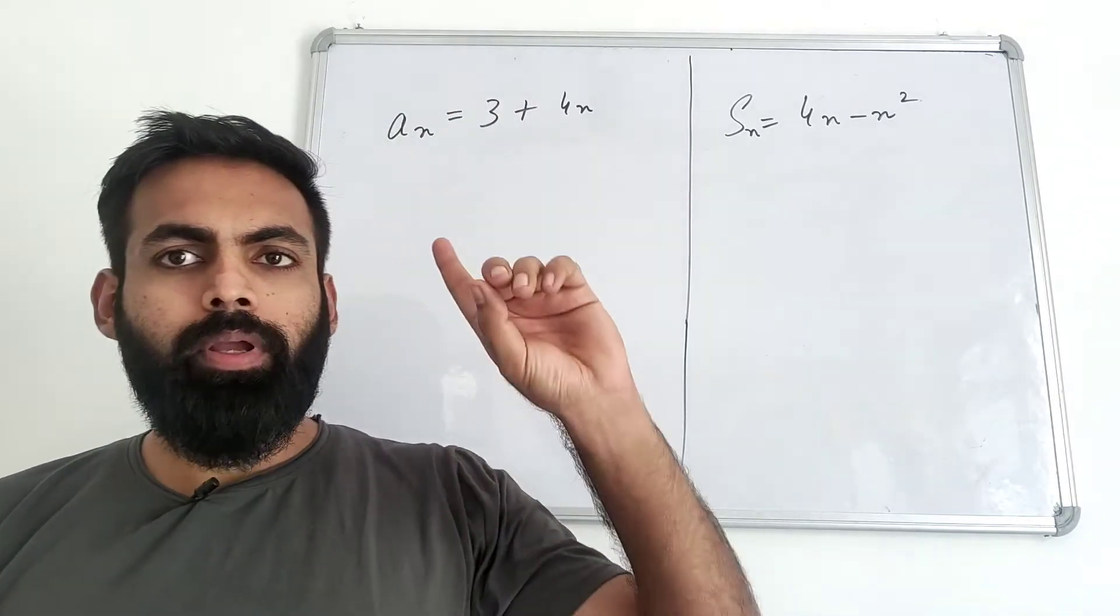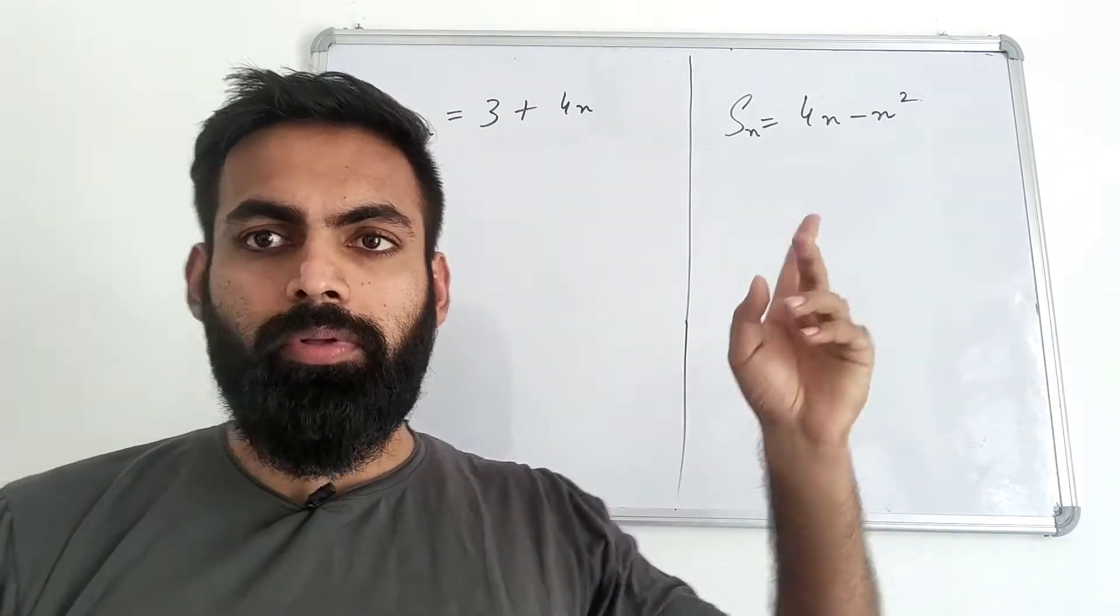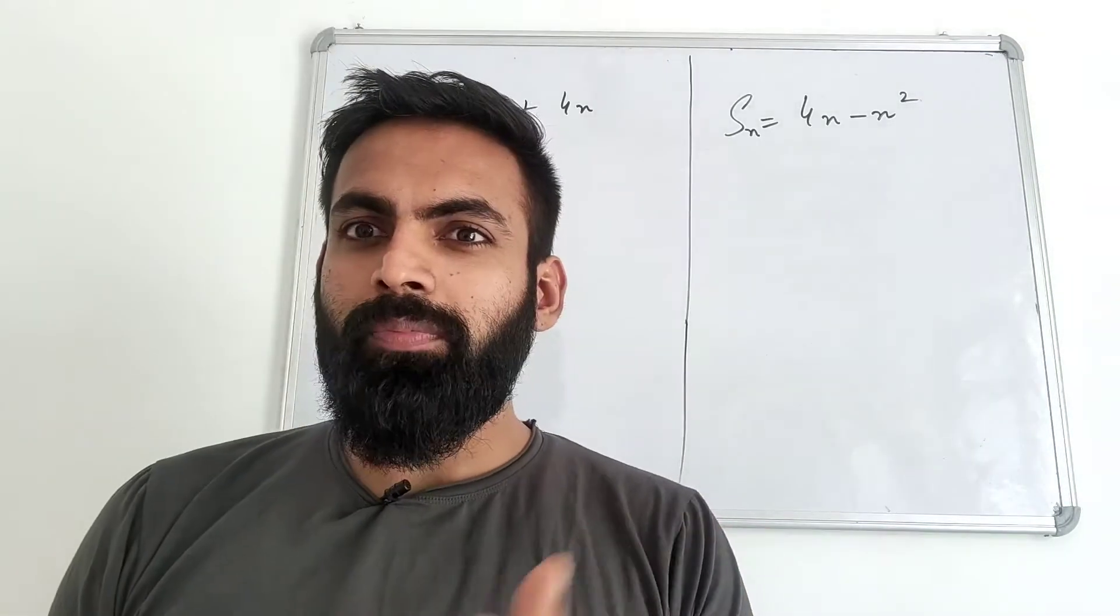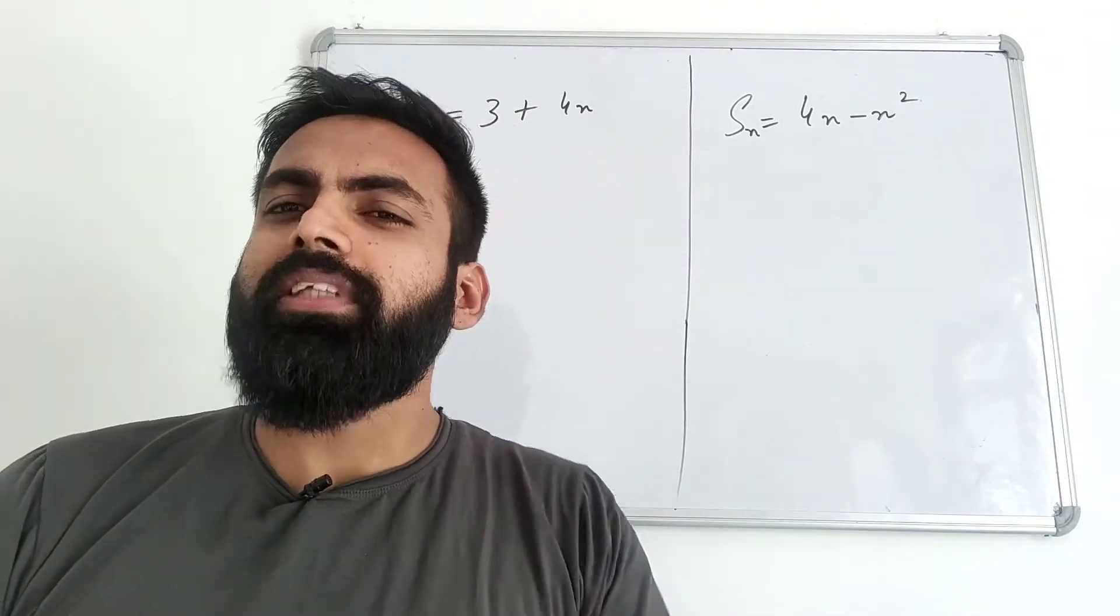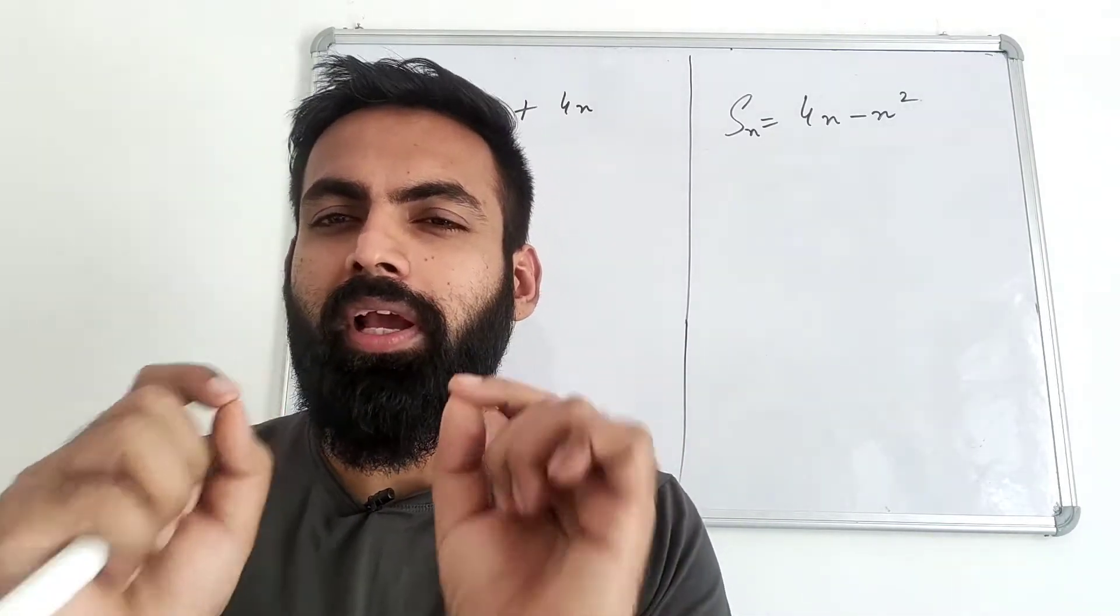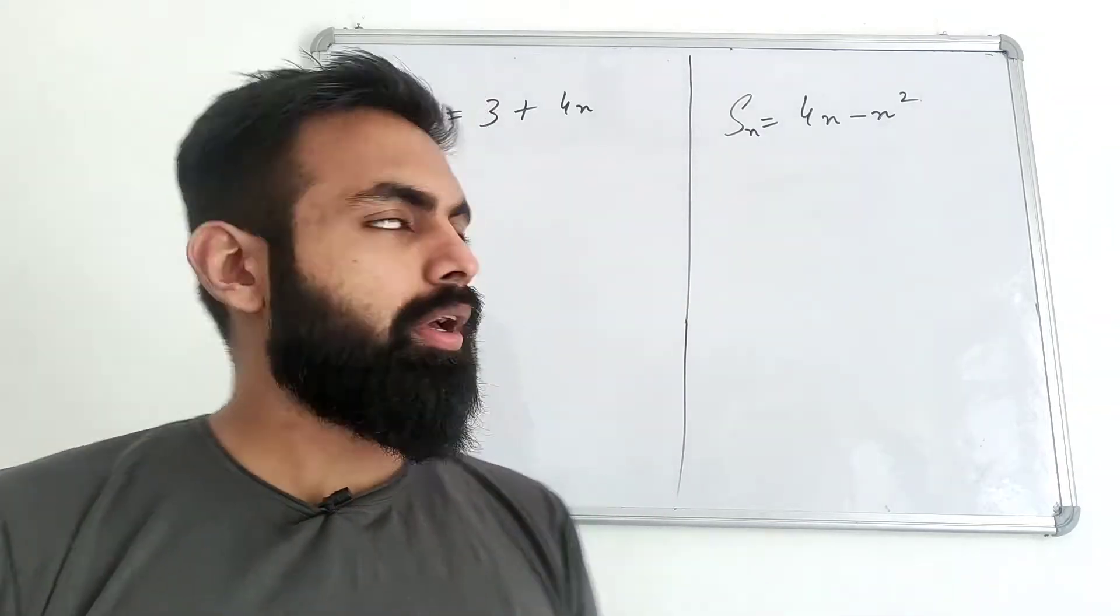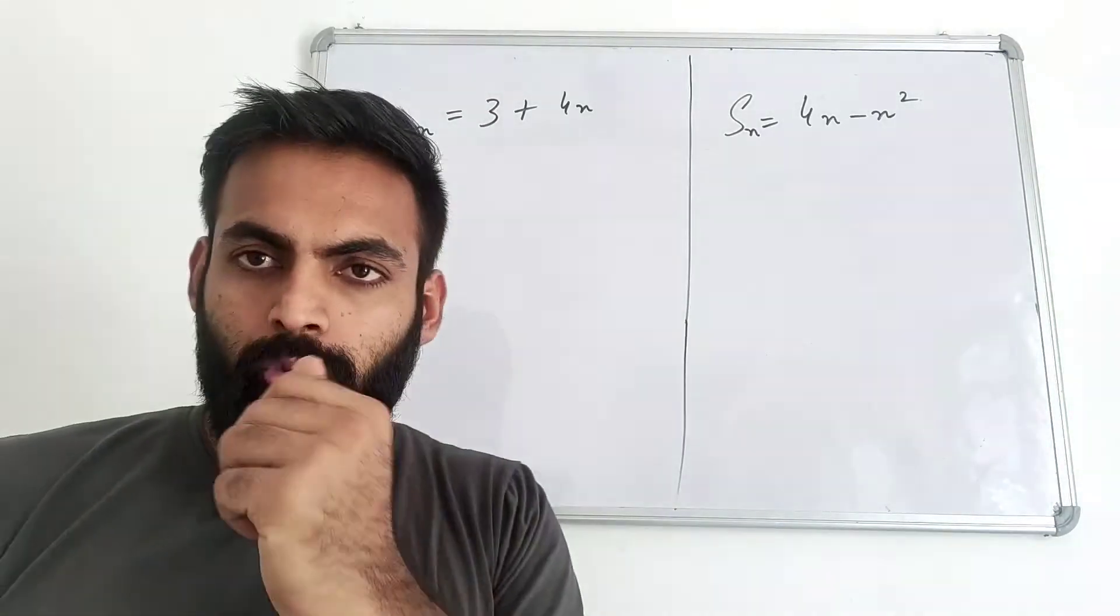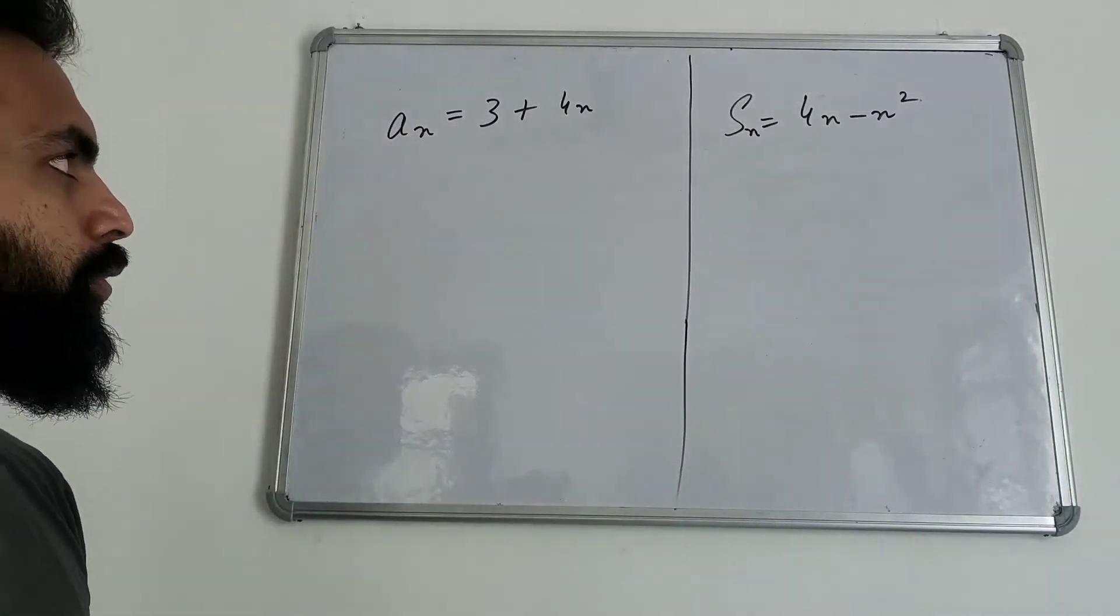Then it should not be difficult. Let us see. Look, if you have a general term given, that is AN, AN is the nth term. You have said that AN is equal to 3 plus 4n.